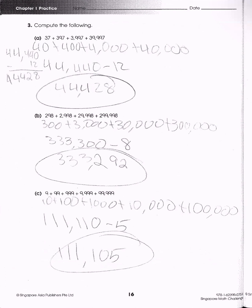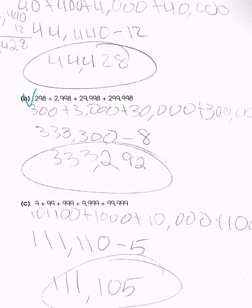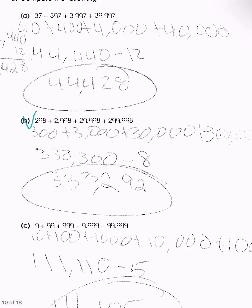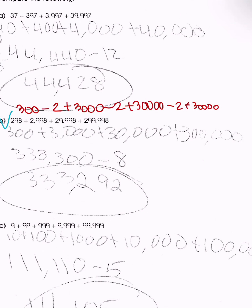Now for the next problem, I'll be going over problem B. All these numbers can basically be expressed as 300 minus 2, plus 3,000 minus 2, plus 300,000 minus 2, plus 300,000 minus 2. So that is going to be 333,300 minus 8, giving us 333,292.